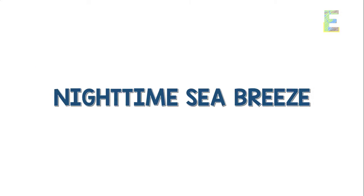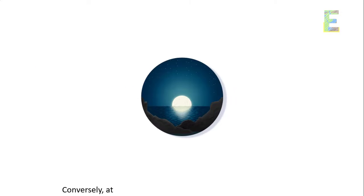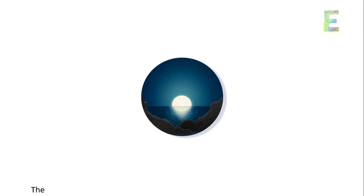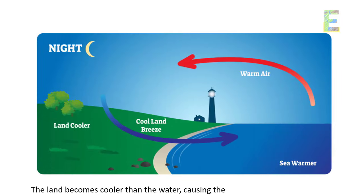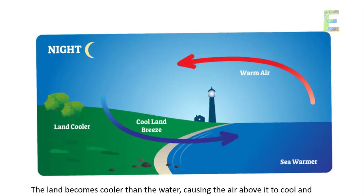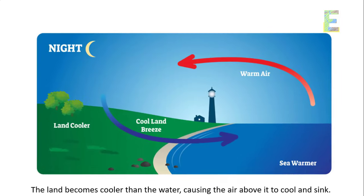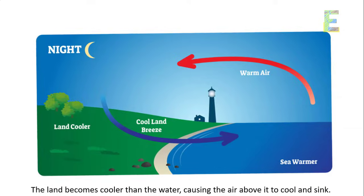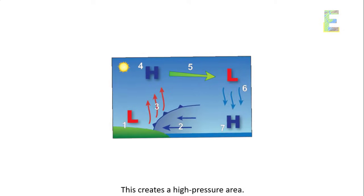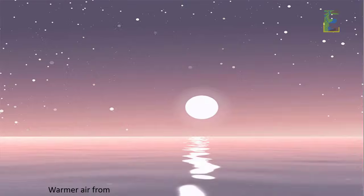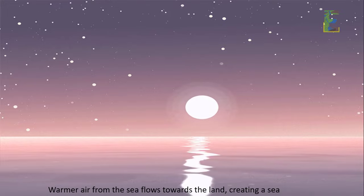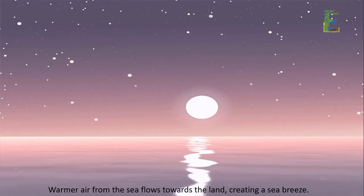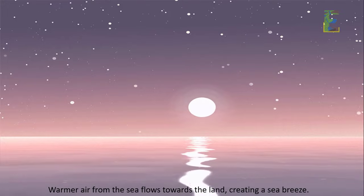Nighttime sea breeze. Conversely, at night, land loses heat more rapidly than the sea. The land becomes cooler than the water, causing the air above it to cool and sink. This creates a high-pressure area. Warmer air from the sea flows towards the land, creating a sea breeze.